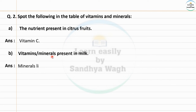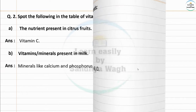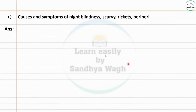Milk contains minerals like calcium and phosphorus and vitamins like A, B, and D. Next — causes and symptoms of night blindness, scurvy, rickets, and beriberi.